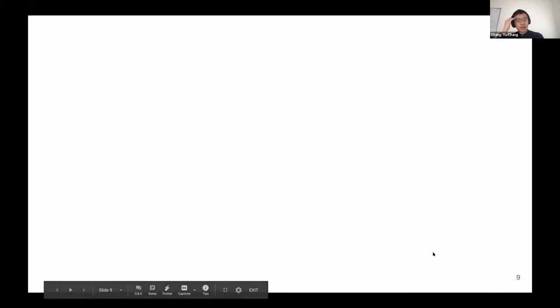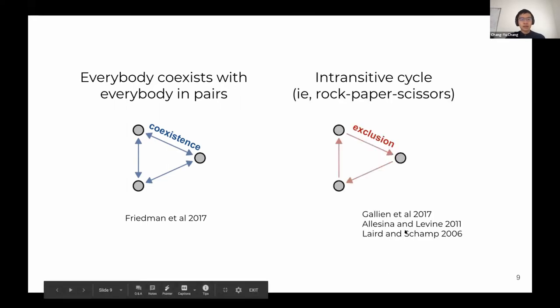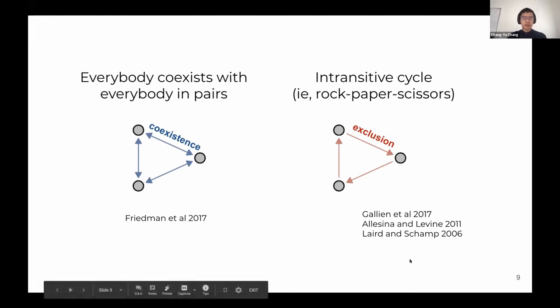There have been several ideas put forward about what network structure we should expect in a coexisting community. The first is the simple assembly rule — everyone coexists with everyone in pairs, so that a trio or higher diversity community can coexist. The other idea is that intransitive cycles should be expected: even though species may not coexist in a pair, they are able to coexist in a trio or higher diversity communities.